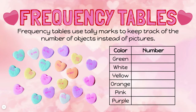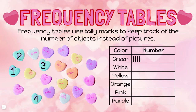A frequency table is similar to a pictograph except it uses tally marks to keep track of the number of objects instead of pictures. Once again, I set up a chart with the color of the hearts on the left and a space to record the number on the right. I count my hearts. I still have four green candy hearts, but this time I'm going to use tally marks — one, two, three, four. That shows four green candy hearts.